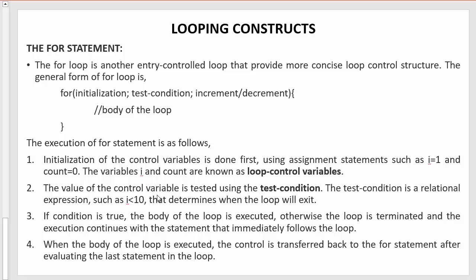Next, the value of the control variable is tested using the test condition. Once we initialize the control variable, that value gets tested in this second part. If the test condition is satisfied for the particular value of the control variable, control comes inside the for loop to execute the body. If the test condition returns false, control will not enter the for loop and instead moves to the next statements outside it.